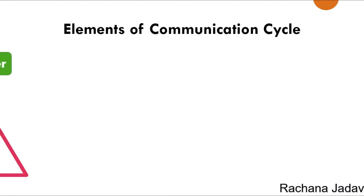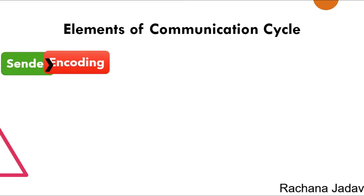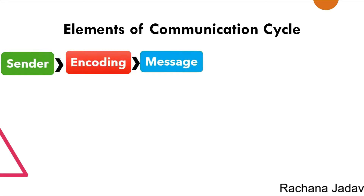Next, the elements of the communication cycle. First of all, the sender — a sender is a person who expresses his opinions and ideas in the form of a message to the receiver. For that message, he or she has to do the encoding. Encoding means the message may be in the form of spoken words, written form, or body language — how you are saying it also depends on that. The message is sent in oral, verbal, or written form.